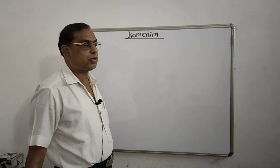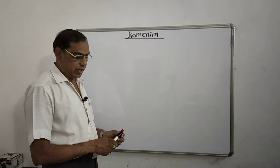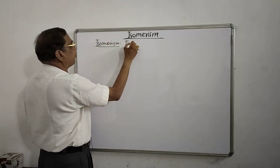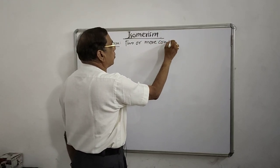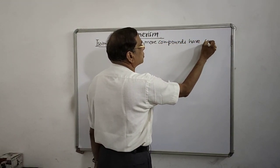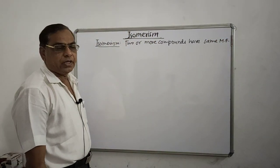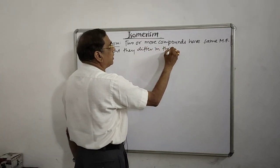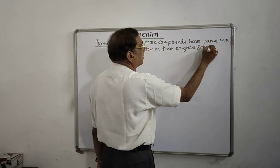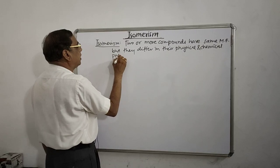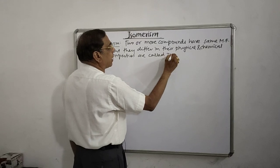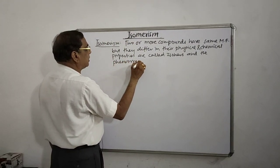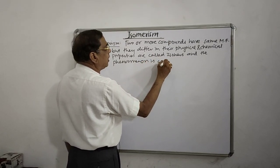Hello students. In this lecture we want to study an important concept in organic chemistry called isomerism. Isomerism means that two or more compounds have the same molecular formula but they differ in their physical and chemical properties. These compounds are called isomers, and the phenomenon is called isomerism.